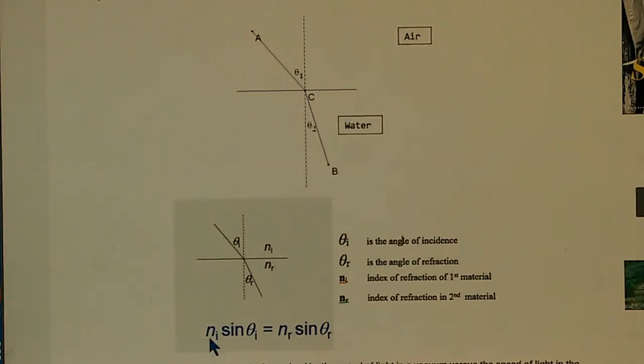So the index of refraction times the sine of the incident angle equals the index of refraction of the material times the sine of the angle of the material. This is called Snell's law.